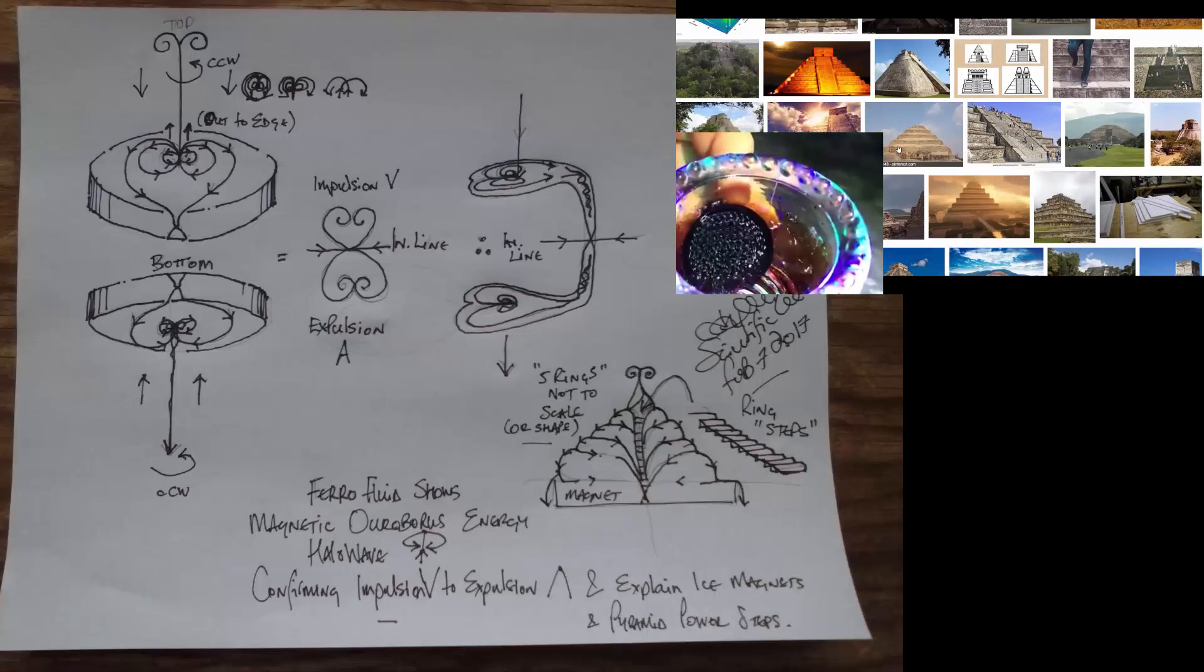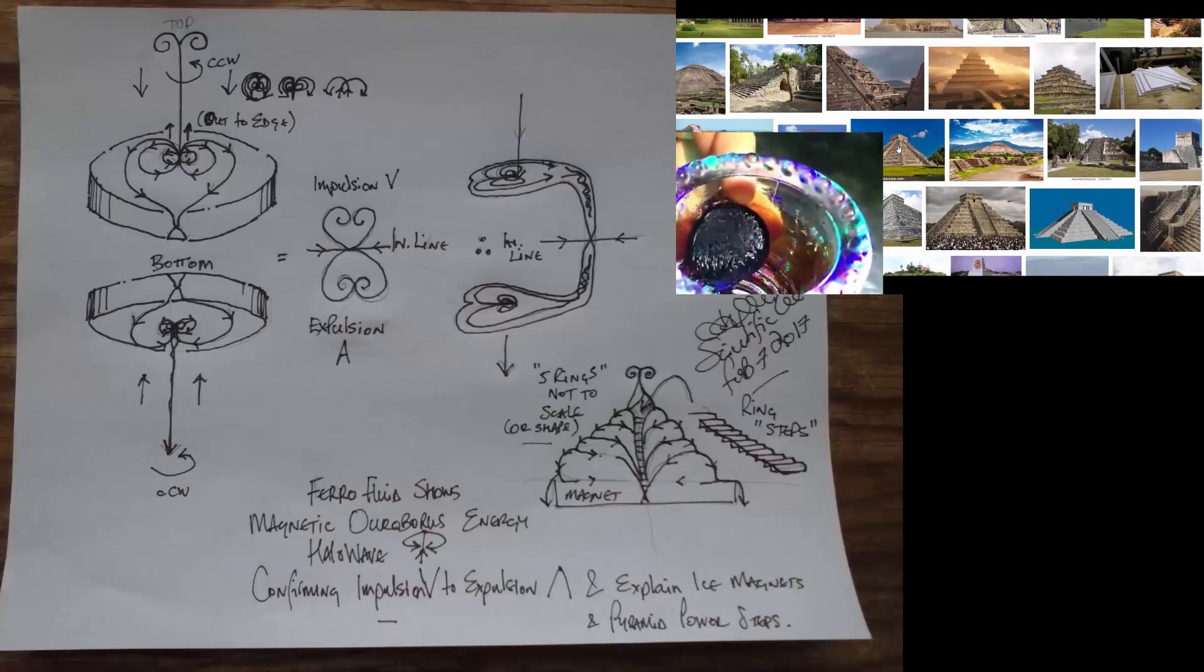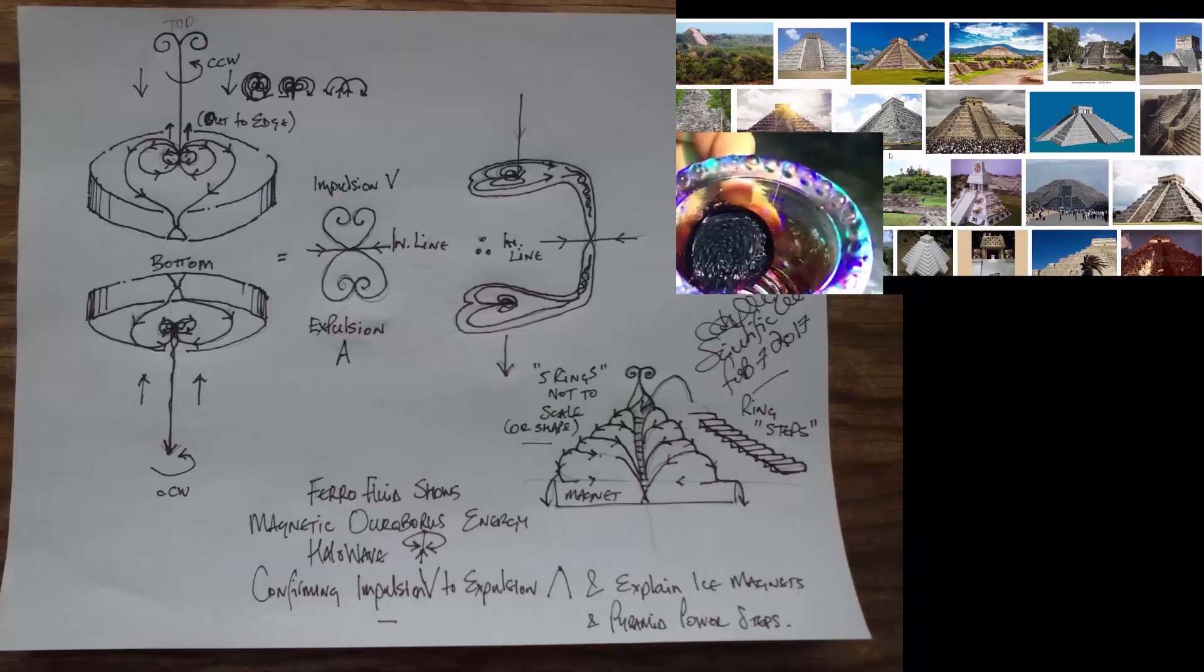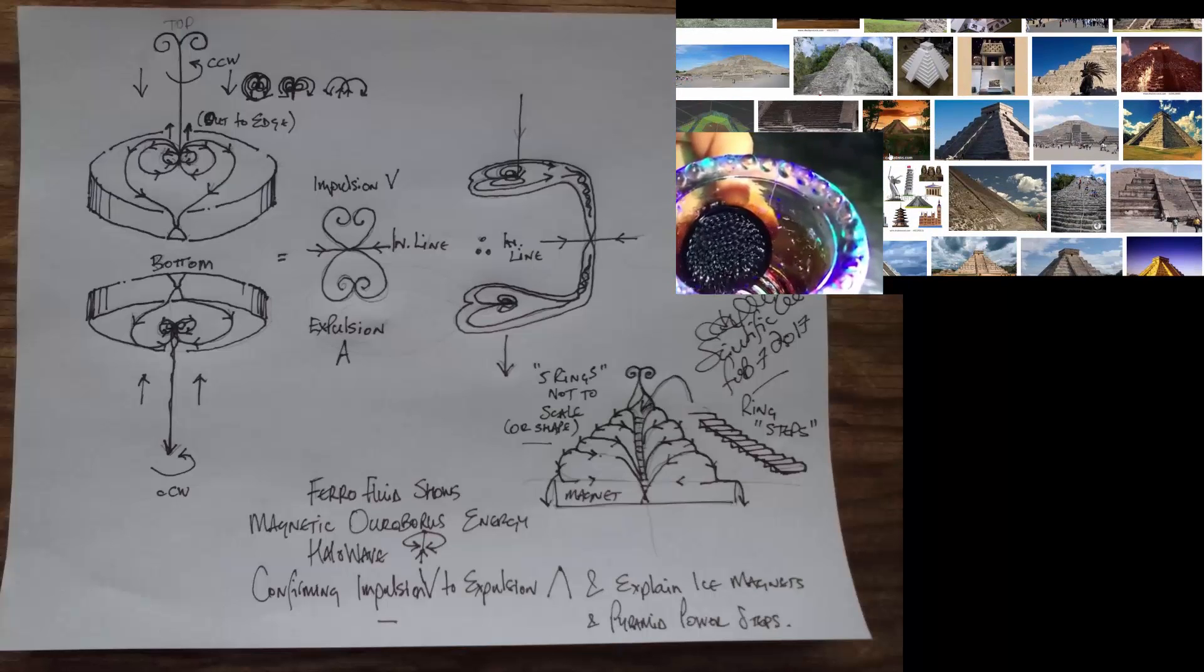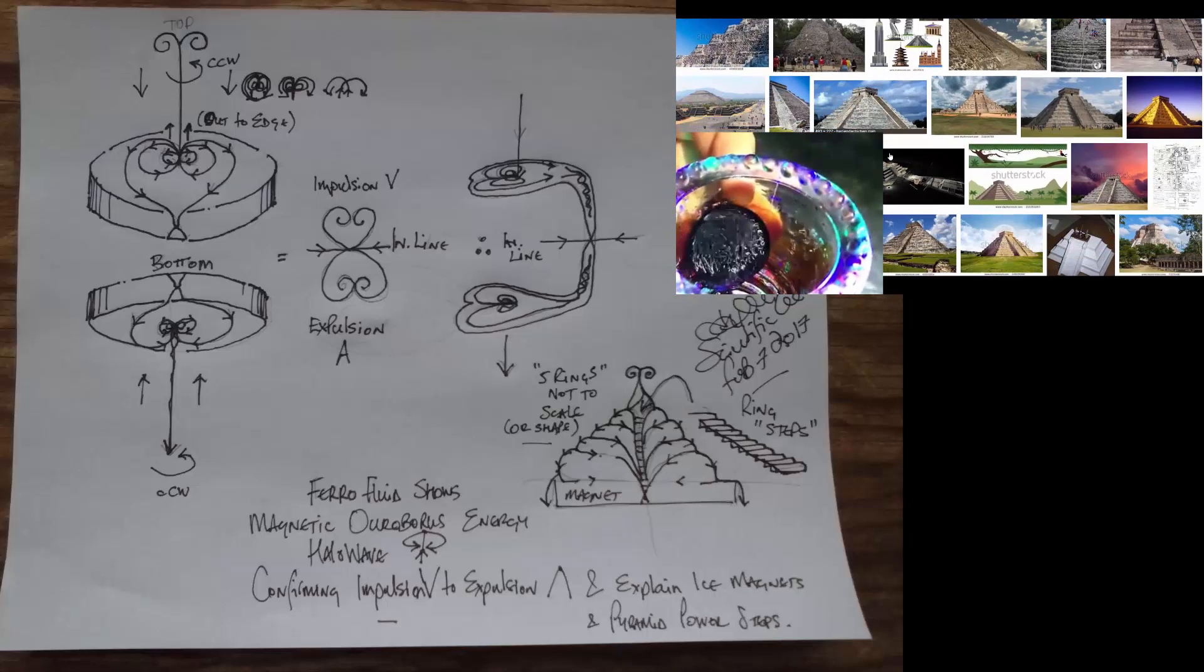And as you can see, I have drawn the magnetic field on top and bottom of the magnet. So it comes in, spins around, goes to the inertia point, crosses over, and then inflects and changes the field.